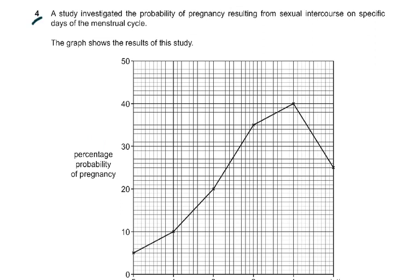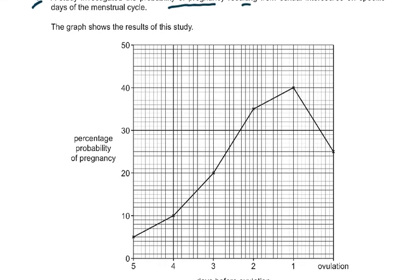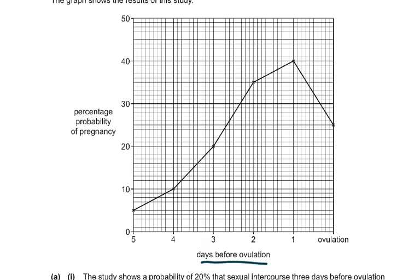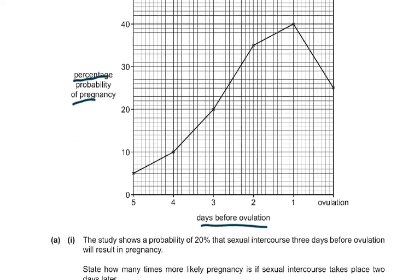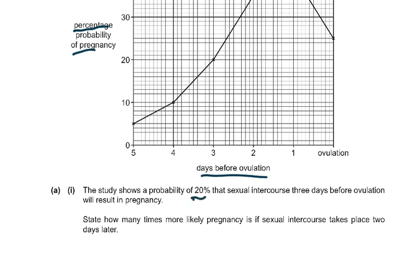Question four: a study investigated the probability of pregnancy from sexual intercourse on specific days of the menstrual cycle. The graph shows: five days before ovulation the probability is about 5%; four days before is 10%; three days before is 20%; two days before is 35%; one day before is 40%; and on the day of ovulation the probability decreases. The study shows a 20% probability if intercourse takes place three days before ovulation.